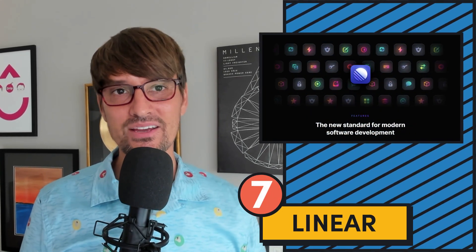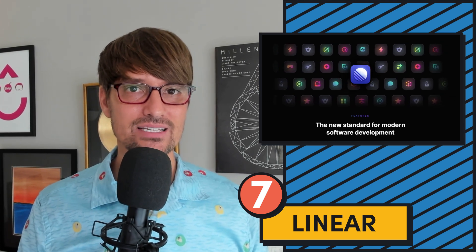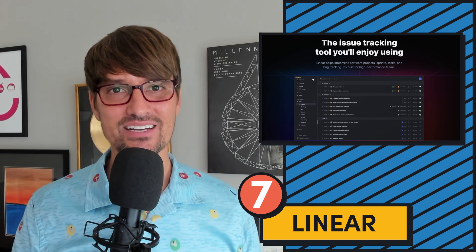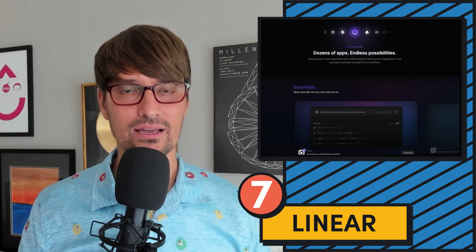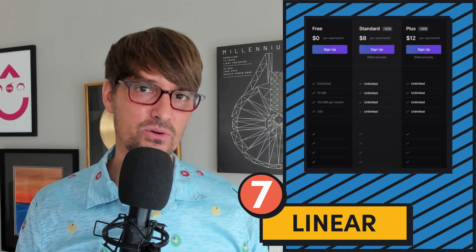Tool number seven is Linear at linear.app. They describe themselves as the issue tracking tool you'll enjoy using. Linear helps streamline software projects, sprints, tasks, and bug tracking built for high-performance teams. There's a free plan, and then tiers at $8 and $12 per user per month. Judging by the website, it's really well designed, so if you're in the market for a project, task, sprint, development, and bug tracker, this is definitely one that would be on my list.